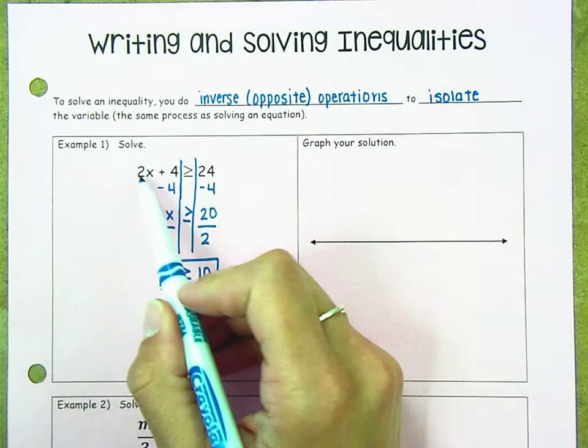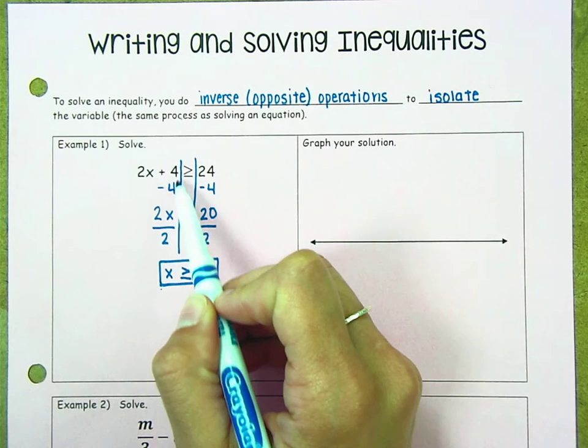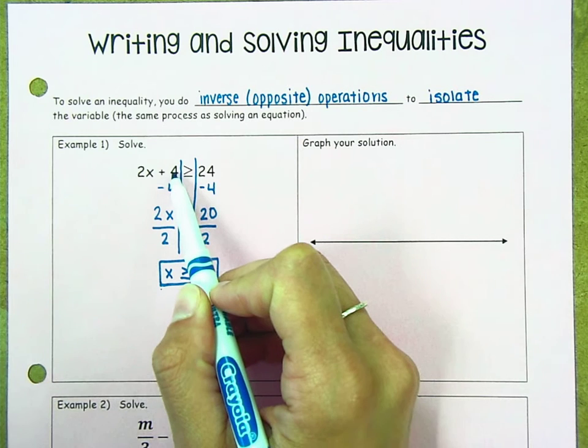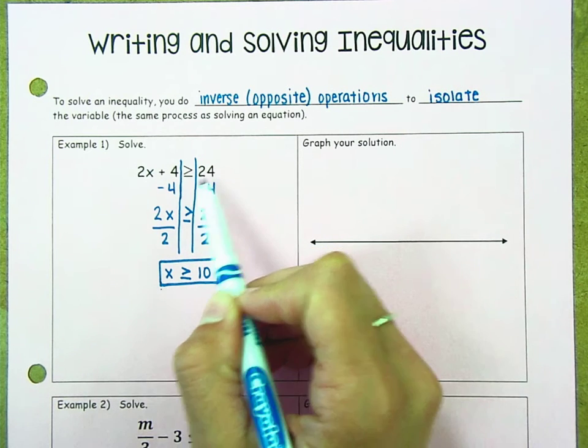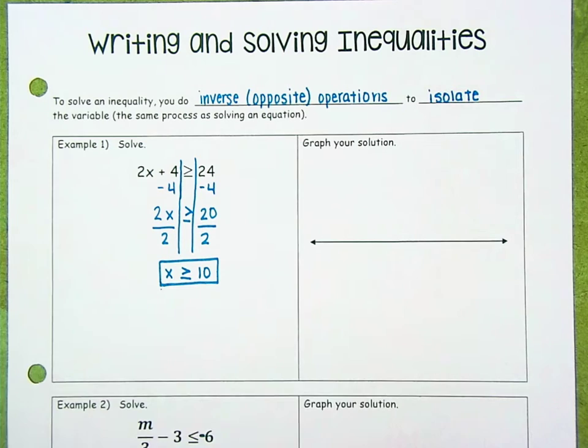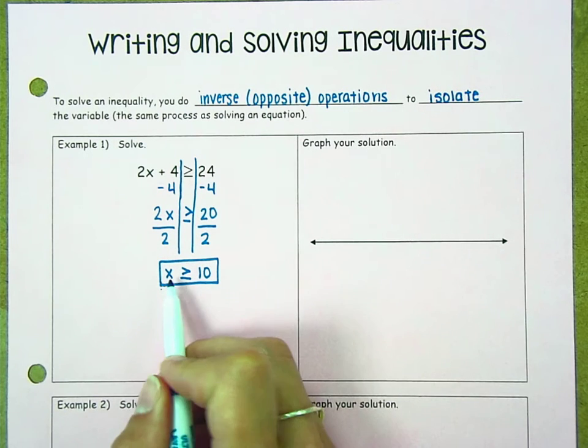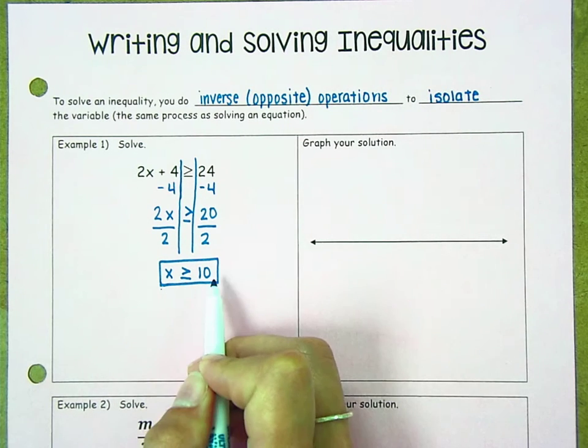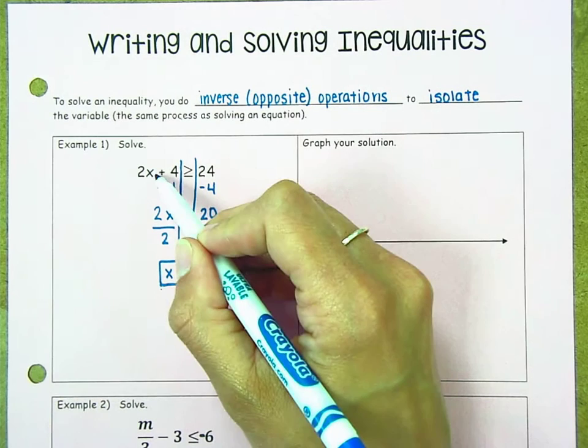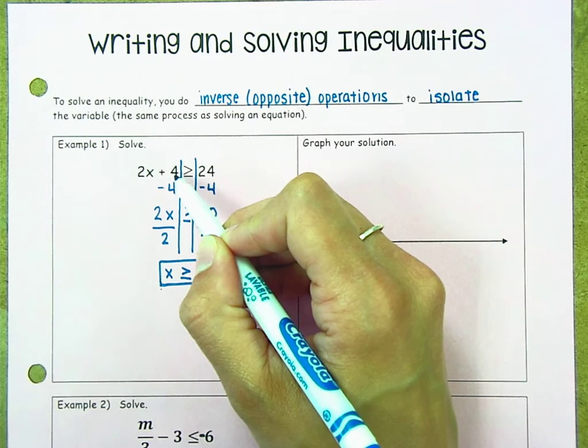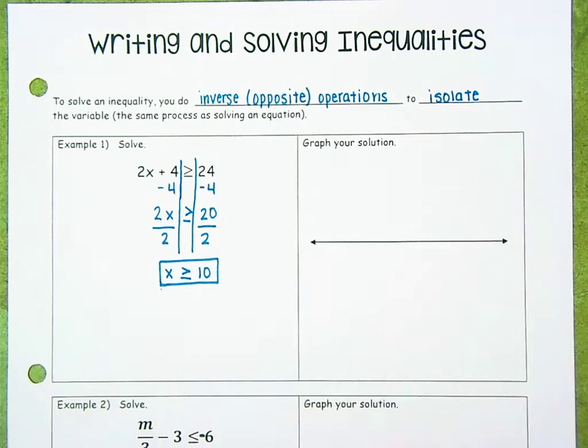So if x is 20, 2 times 20 is 40 plus 4 is 44. 44 is in fact greater than or equal to 24. We know that x could also be 10 because 10 is greater than or equal to 10. 2 times 10 is 20 plus 4 is 24. 24 is greater than or equal to 24.